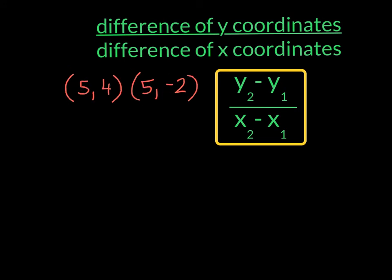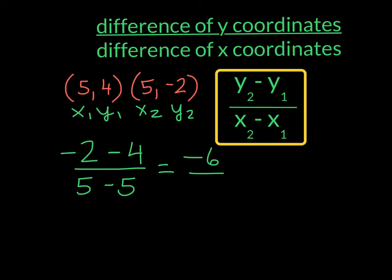Here's our last example, and we're going to label the points. My y2 is negative 2, and from it I'm going to subtract the y1, which is 4. And in the denominator, my x2 is 5. And I'm going to subtract from it 5. So in the numerator, I owe 2 and I owe 4, so I owe 6. And in the denominator, 5 take away 5 is going to give me 0. We have seen this before. This is undefined. We can't divide by 0. This is going to give us a situation that's called no slope.